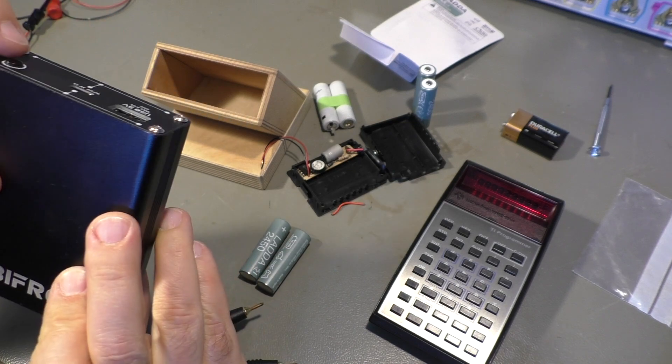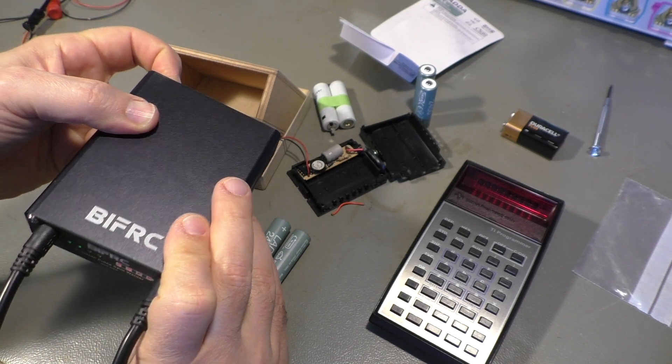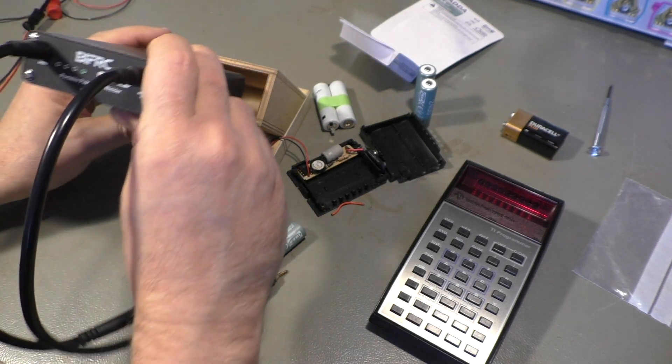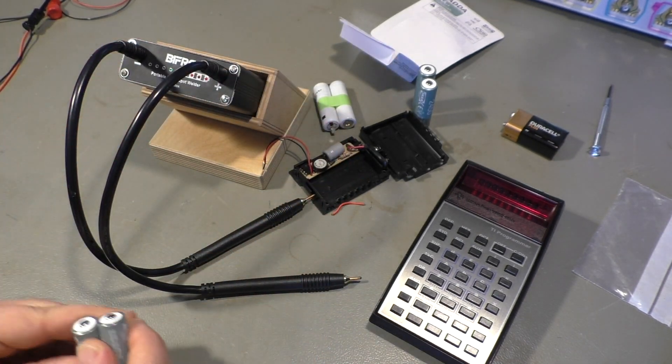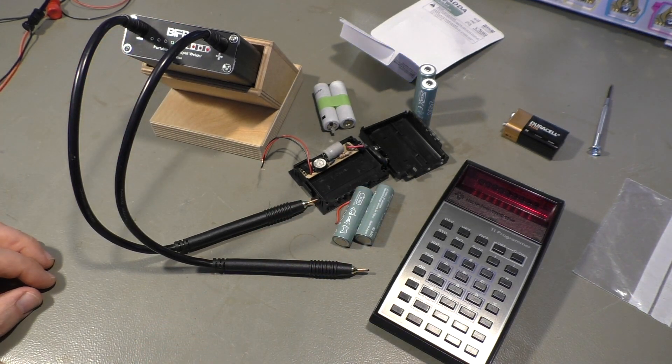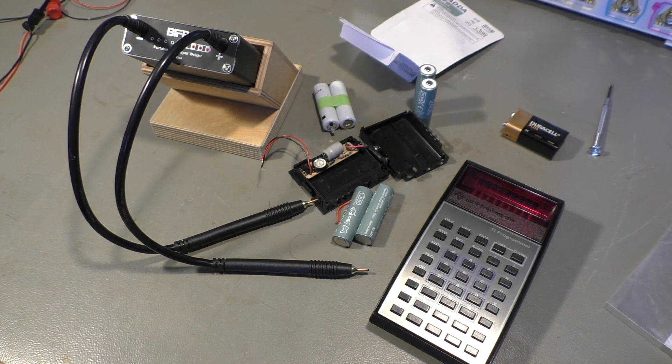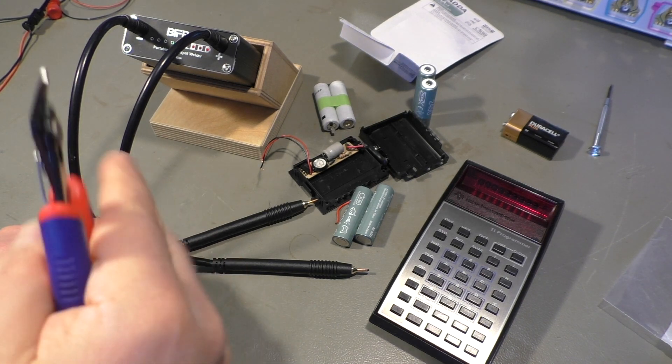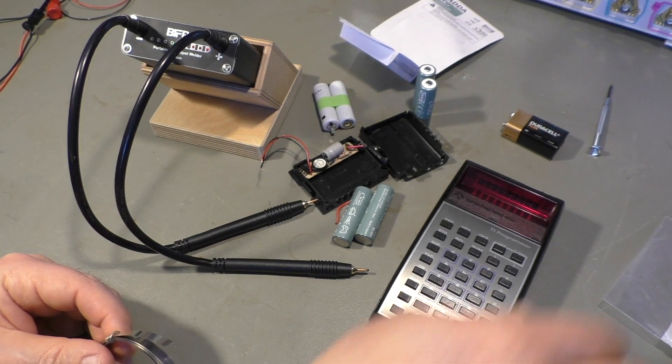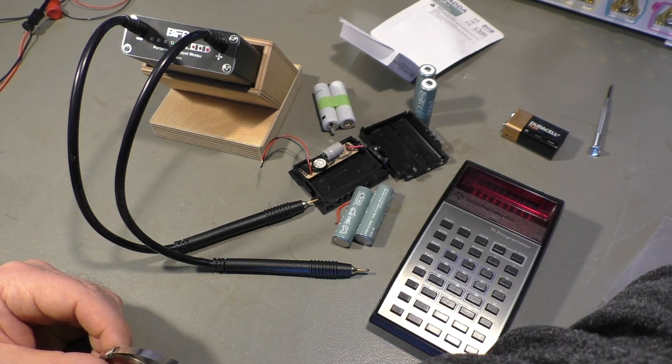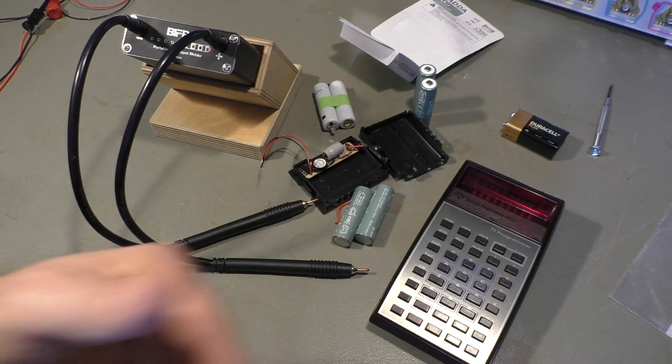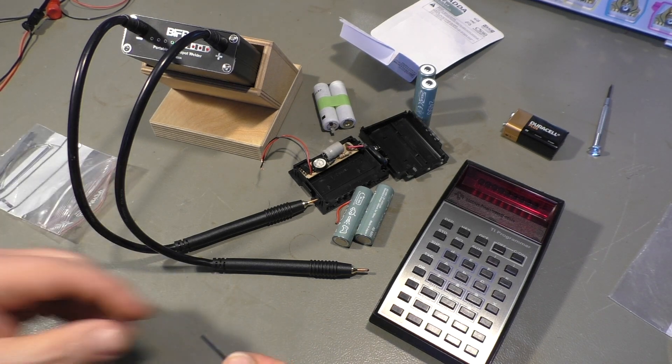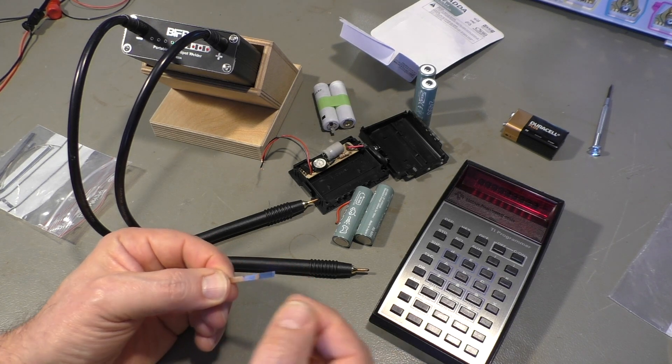And for that I have this tiny little portable battery welder here. Let's set it to level 4. That's the best one for batteries like that, at least on my device here. Let me see, we need some nickel strips. So, that would be a good size here.